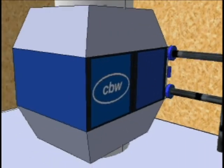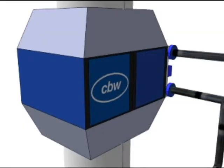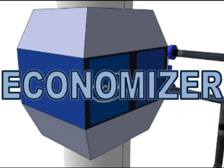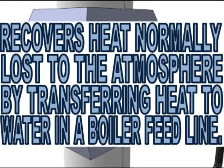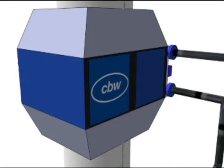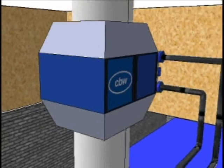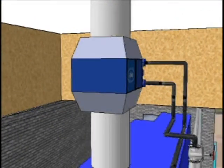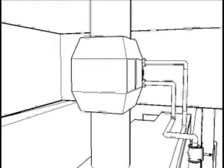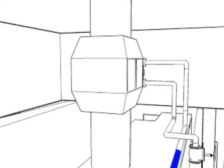And finally we come to the economizer which recovers heat normally lost to the atmosphere and transfers it to a boiler feed line. That process is shown in the short animation.